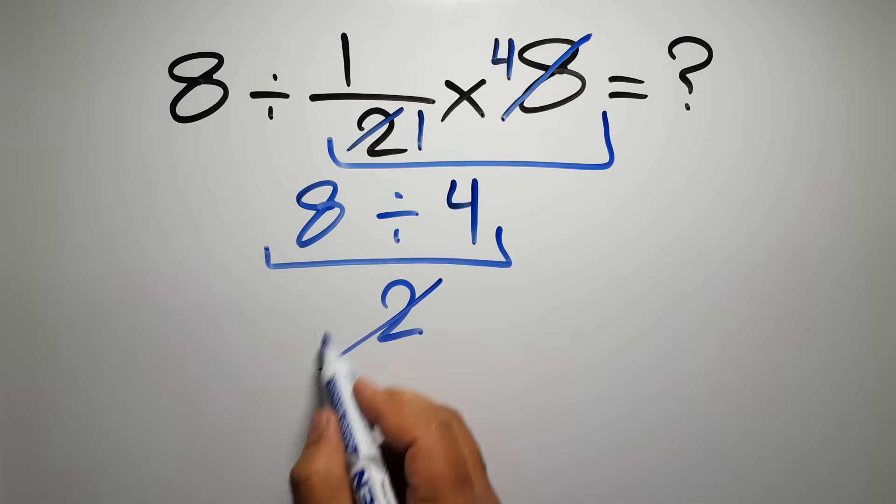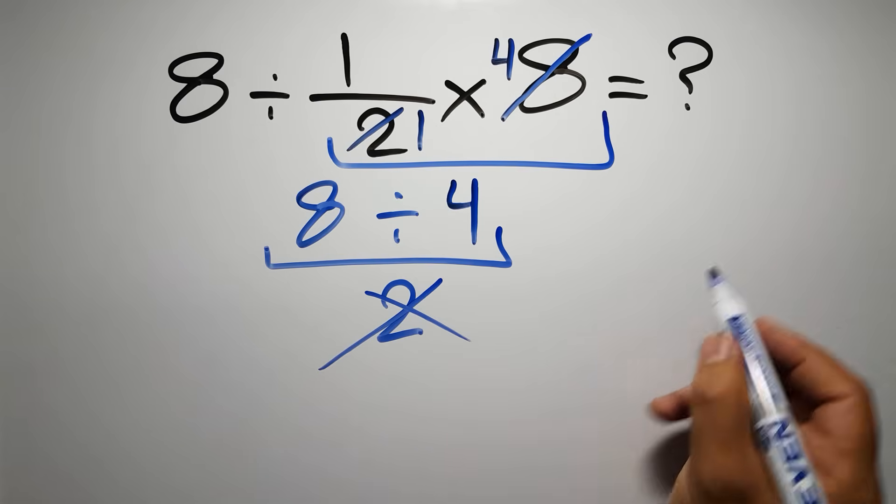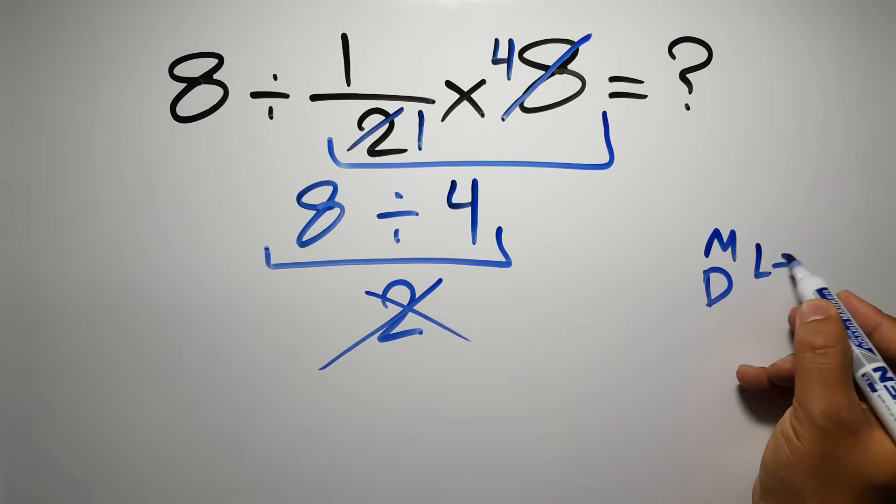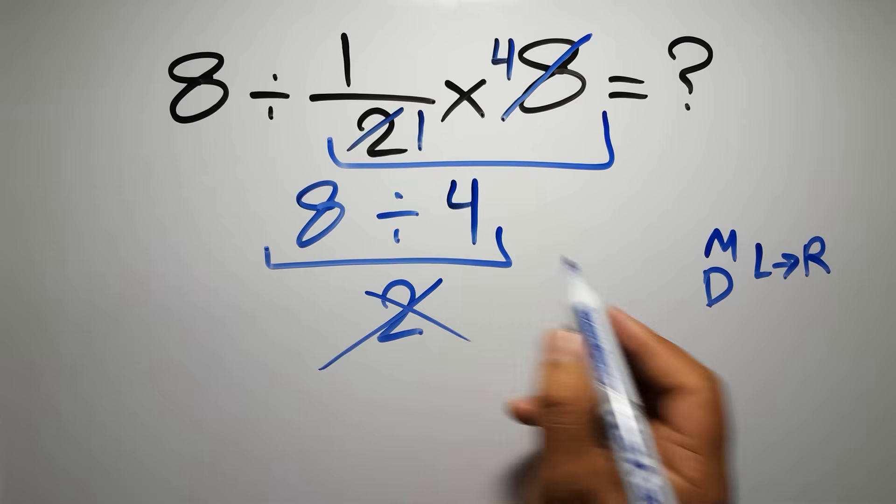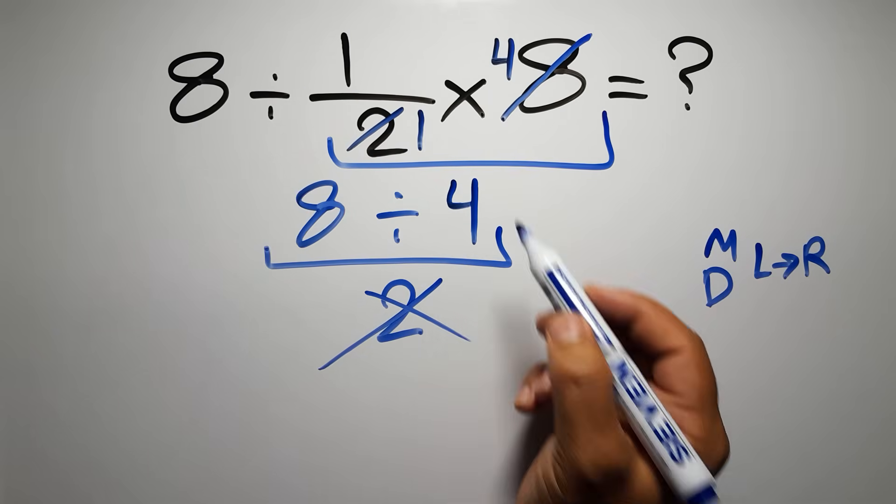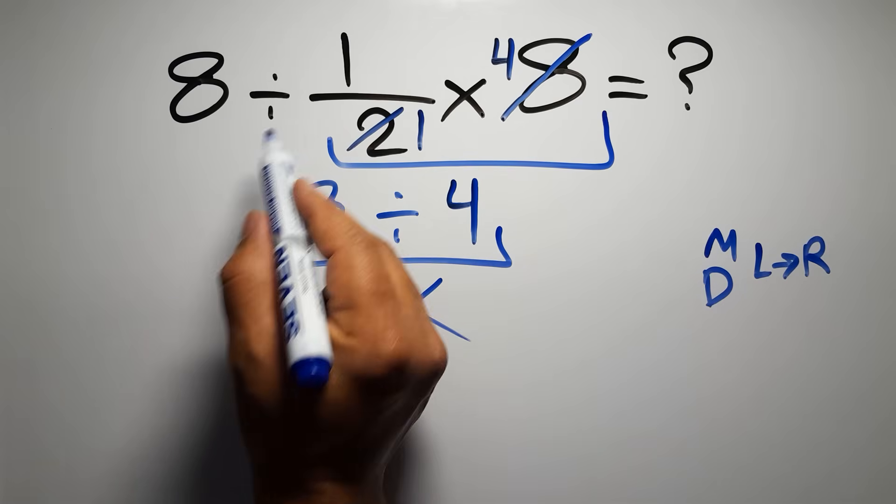But this answer is not correct, because according to the order of operations, multiplication and division have equal priority, and we have to work from left to right. So here first we have to do this division, then this multiplication. If we do this multiplication before this division, it is wrong.